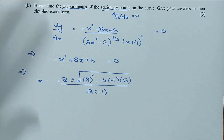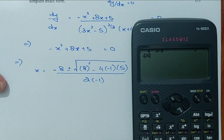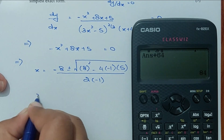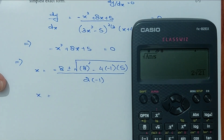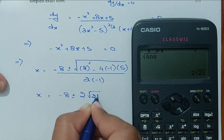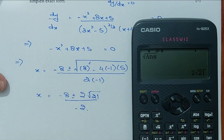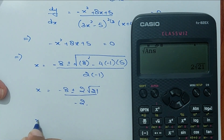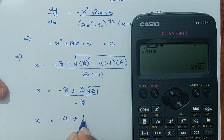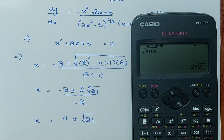For this simplification, 4 times 1 times 5 is 20, and 8 squared is 64, so the discriminant is 84, and √84 = 2√21. So x = (−8 ± 2√21) / (−2). Simplifying: −8 over −2 is 4, and the 2 cancels with the denominator, giving ±√21. So the x-coordinates of the stationary points are 4 + √21 and 4 − √21.